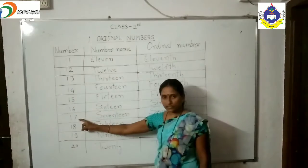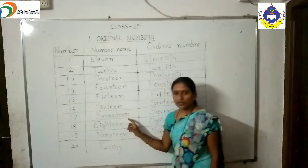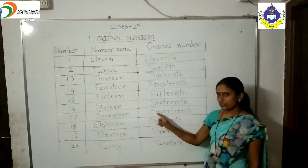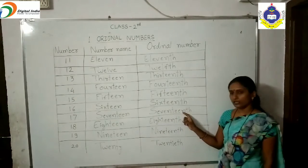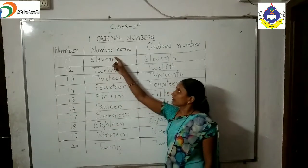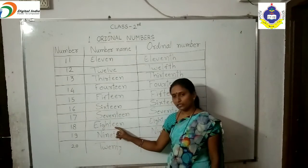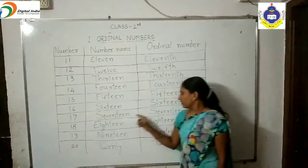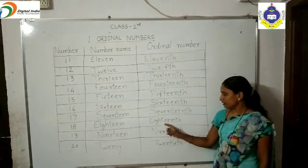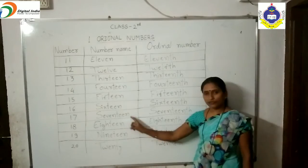Next, 17: the number name of 17 is S-E-V-E-N-T-E-E-N, and its ordinal number is seventeenth, spelled S-E-V-E-N-T-E-E-N-T-H. Okay. Next, 18: the number name is E-I-G-H-T-E-E-N, and its ordinal number is eighteenth, spelled E-I-G-H-T-E-E-N-T-H. Write T-H in front of 18.